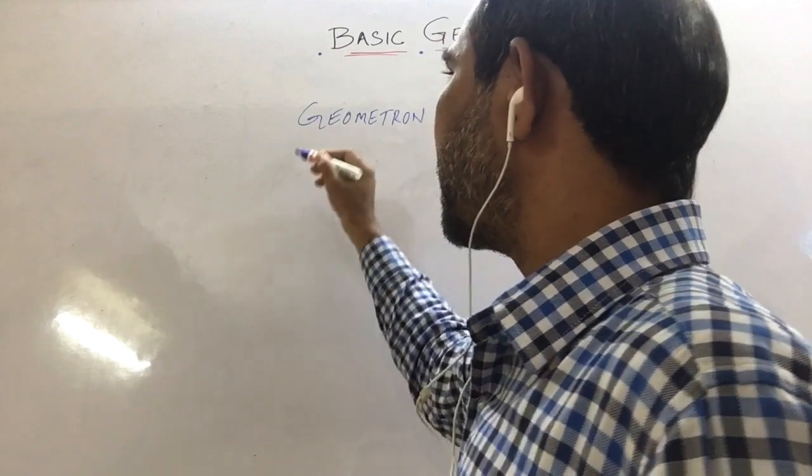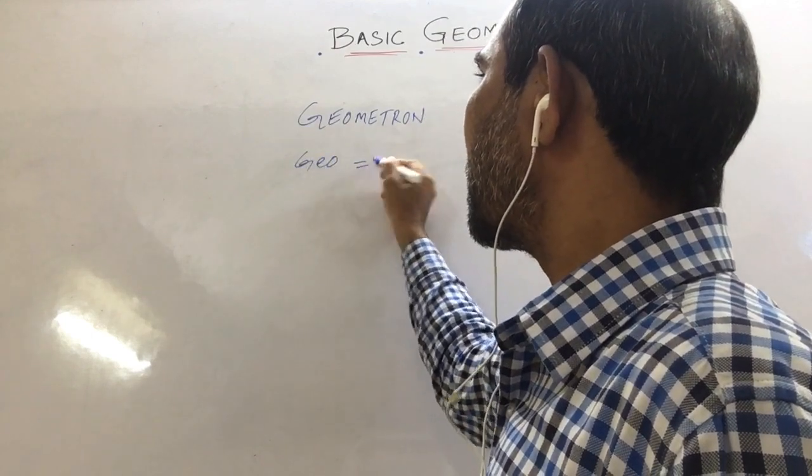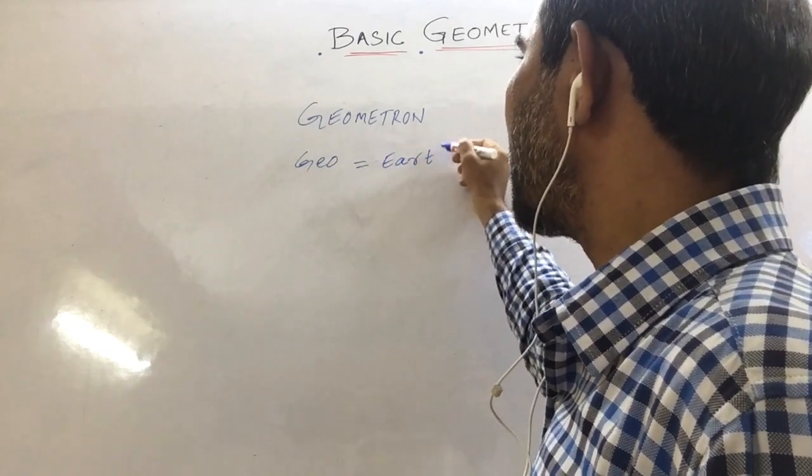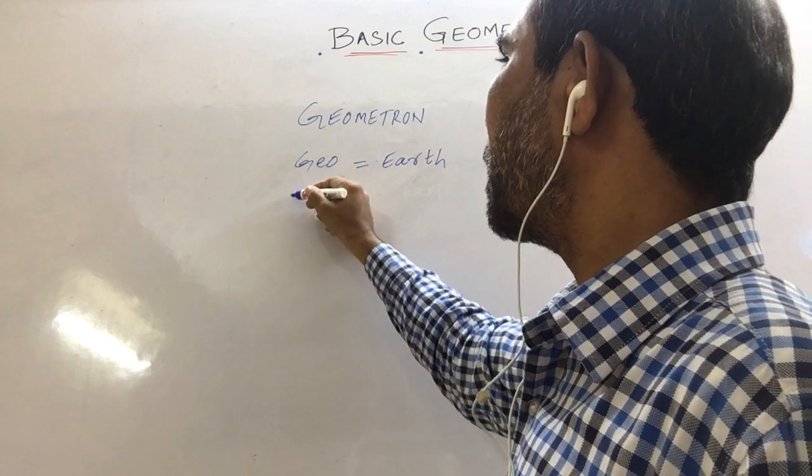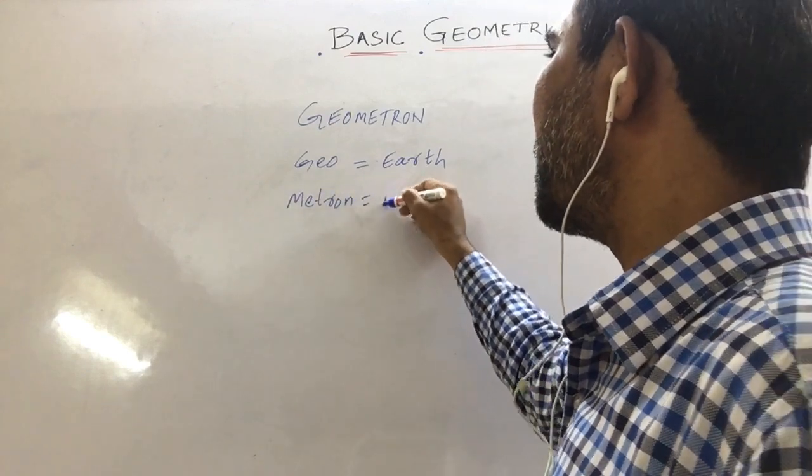Geometron, there are two terms here: one is geo which means earth in English and metron which means measurement.